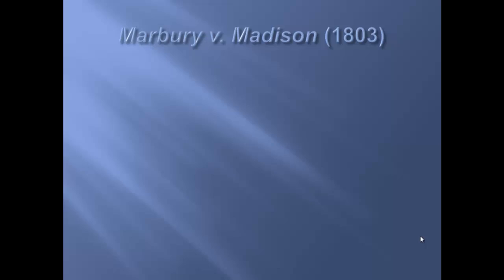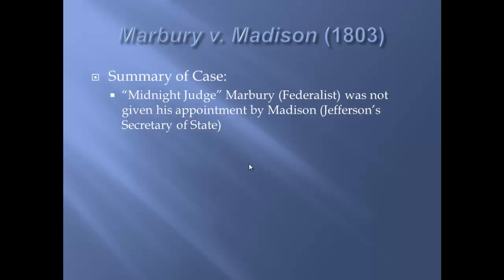The very first important key court case under John Marshall was Marbury versus Madison in 1803. There was a midnight judge appointed by John Adams in the last few days of his presidency. His name was Marbury and he was a Federalist. The papers for him to become a judge were to be delivered when Thomas Jefferson was president, by his secretary of state, James Madison. They did not want a Federalist judge, so they refused to deliver his papers.